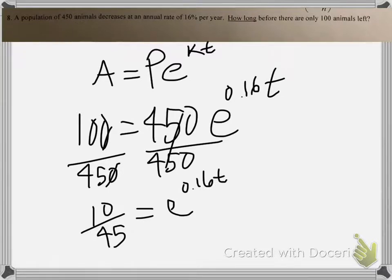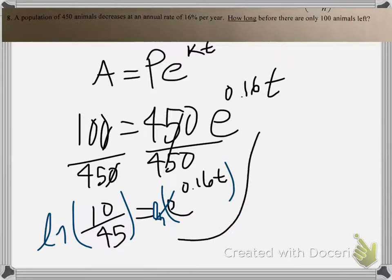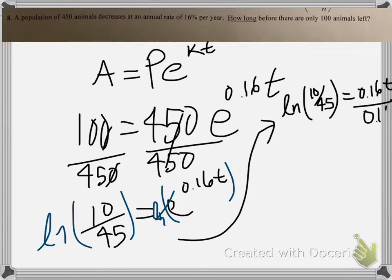Now we use LN on both sides. Again, this cancels. And then now you have 0.16 on one side. Let me go ahead and bring it over here. LN of 10 over 45 equals 0.16 T. Now you divide it by 0.16.